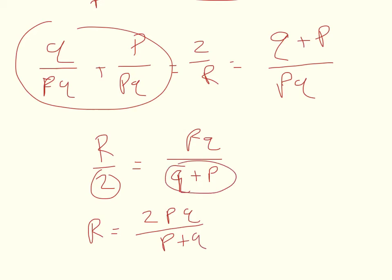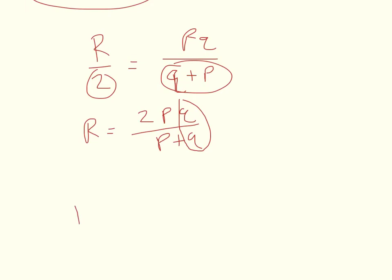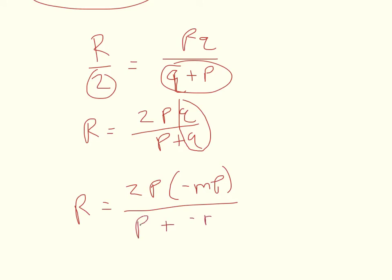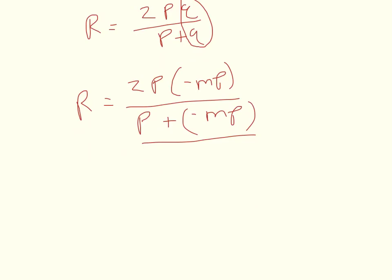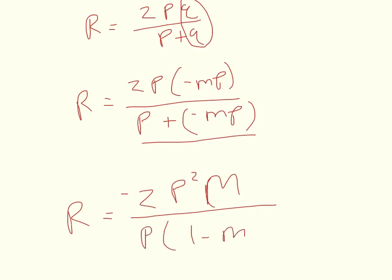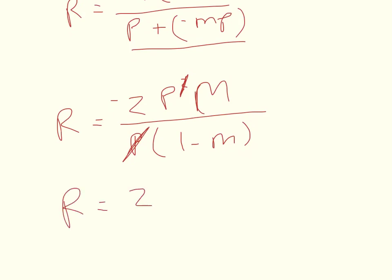I flip-flopped Q and P, which is valid by commutativity of addition. Now I substitute Q equals negative MP into the equation: R equals 2 times P times negative MP divided by P plus negative MP. You can solve right there, or simplify further by factoring out P from the denominator. That gives negative 2P squared times M on top, and P times 1 minus M on the bottom. Canceling the P, I get R equals negative 2PM over 1 minus M.